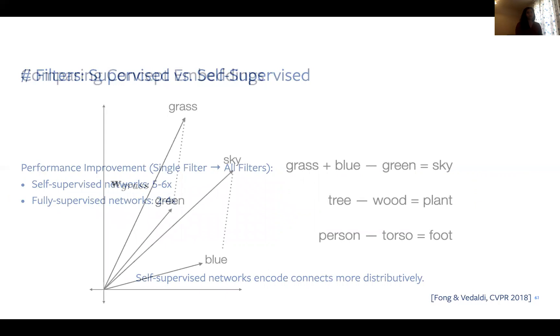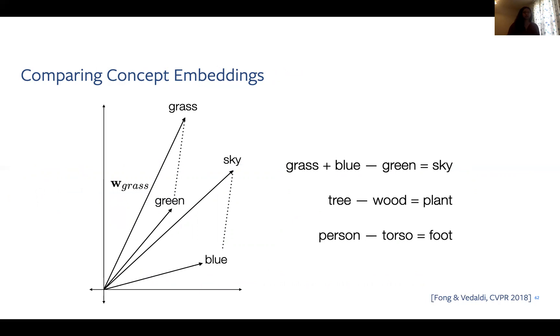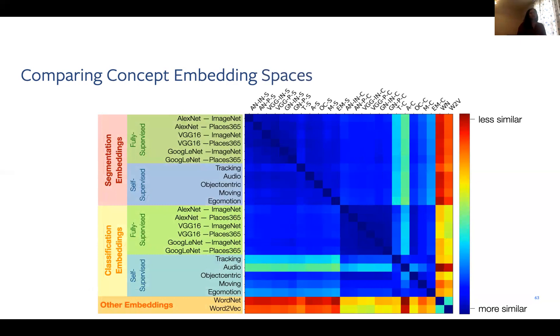Lastly, we can view our learned concept weights as network-aligned concept embeddings, where each dimension is aligned to a filter. To our knowledge, our work is the first of this kind and allows us to do things like vector arithmetic and network activation space without input from the textual modality. Here are a few examples. In the first example, we take the grass concept vector and add the blue concept vector to it and then subtract the green one. And the resulting vector is closest to the sky vector. Similarly, when we take the tree vector and subtract the wood vector from it, we get a vector that's close to the plant one. And lastly, when we take the person vector and subtract the torso one, we get a result that's closest to the foot vector. This shows that the relationships between a network's understanding of concepts is actually quite semantic and that makes sense.